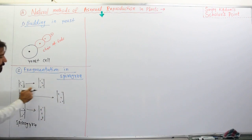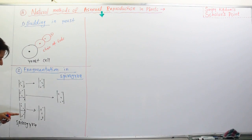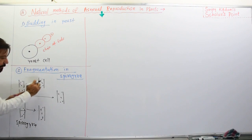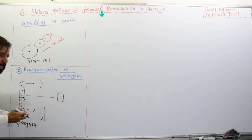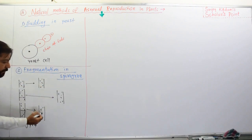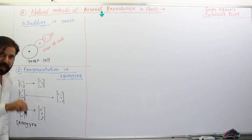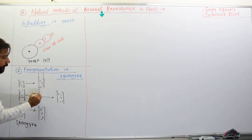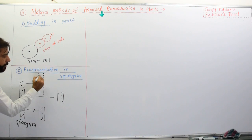There are three fragments — three pieces of the parent Spirogyra formed by fragmentation. Each piece, meaning each fragment, gives rise to a new Spirogyra.